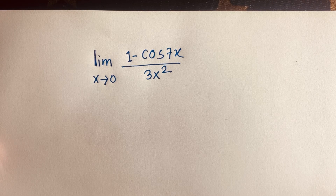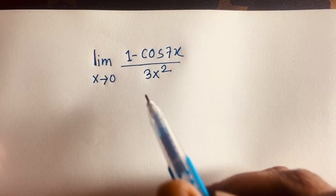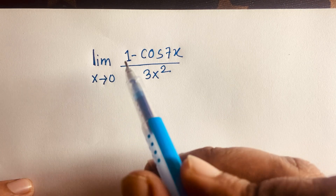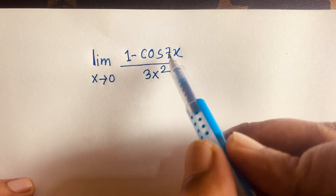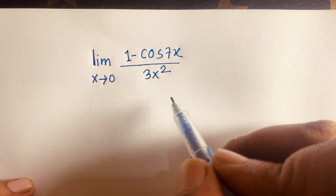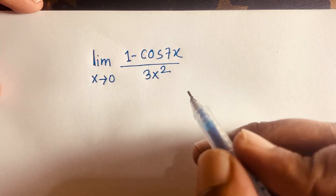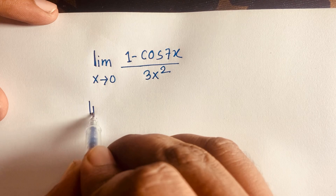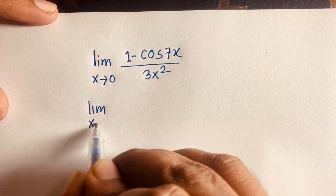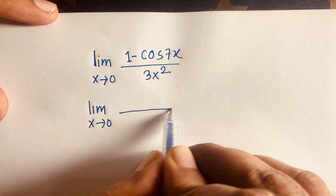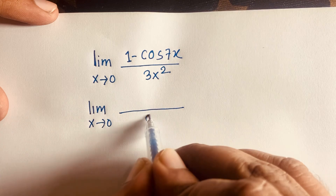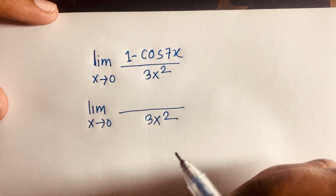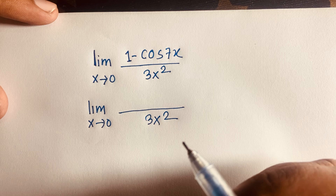Hello everyone. In this video we'll solve this interesting math question: limit x tends to 0 of 1 minus cos 7x over 3x squared. So first of all, here is limit x tends to 0 and here is 3x squared. Now, 1 minus cos 7x — let's see what this equals using a known identity.